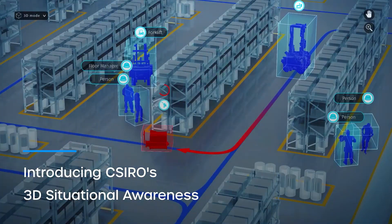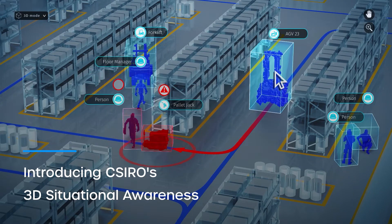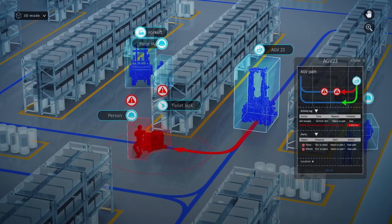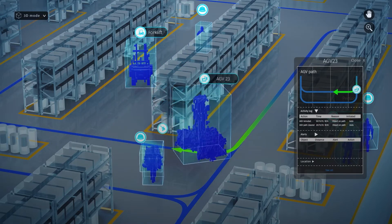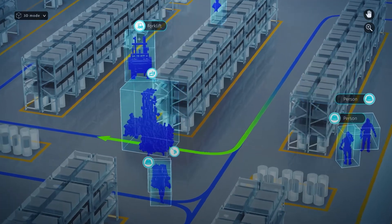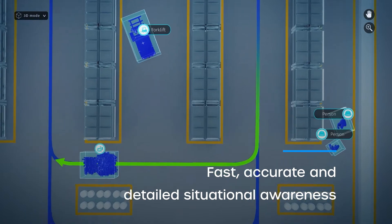CSIRO's 3D Situational Awareness, or 3DSA, is a powerful tool that combines a network of security cameras with cutting-edge algorithms to track and record all moving objects. 3DSA constructs 3D models of objects in real-time, providing fast, accurate and detailed situational awareness.